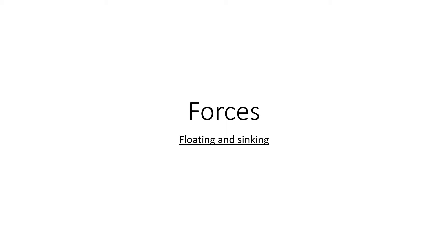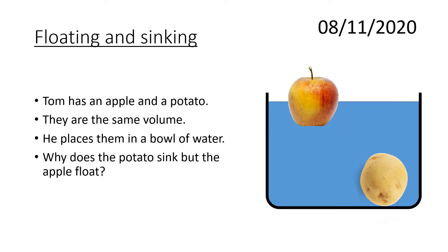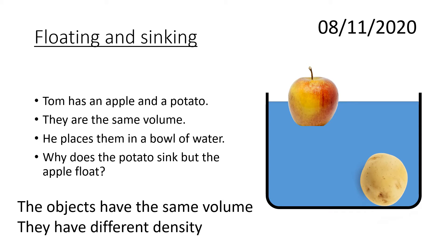This is a Key Stage 3 presentation looking at floating and sinking, which was part of the Forces section of the National Curriculum. In this example we have two objects. The two objects are the same volume, so they take up the same amount of space. If the two objects were placed in water, one of them is floating and the other one has sunk. The question is why does one float and why does one sink? The basic answer is the concept of density — the density of the two substances is different, and because of that we have different things going on in terms of floating and sinking.